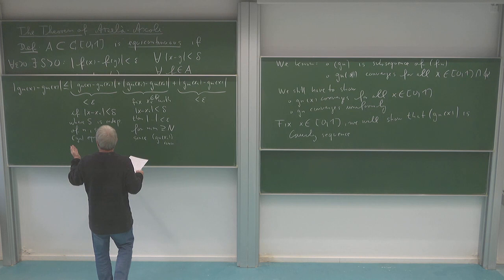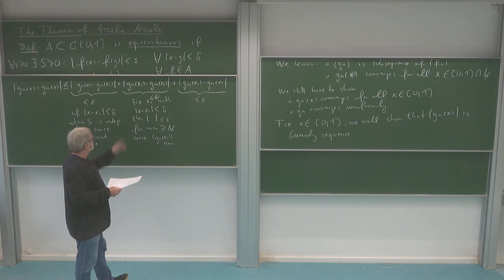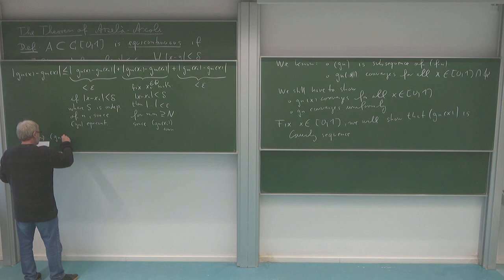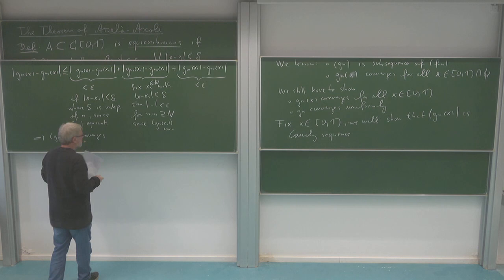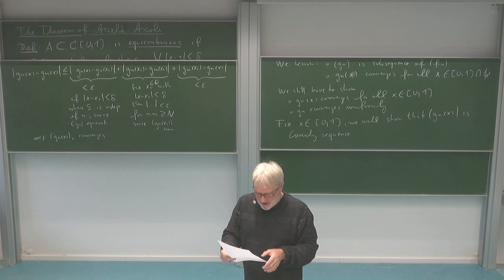For a given epsilon there is a delta, and then for this delta there is a capital N such that if n and m are bigger then this is smaller than 3 epsilon. This is exactly the Cauchy property. So this is a Cauchy sequence, and this tells me that GN of x converges. This argument is valid for any x, so this means pointwise we have now seen that the sequence GN converges pointwise.